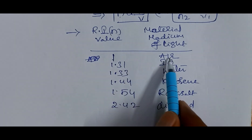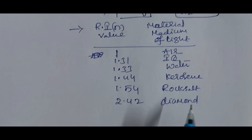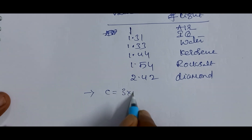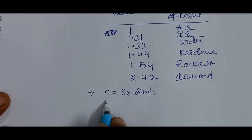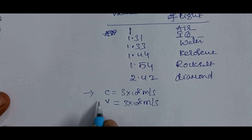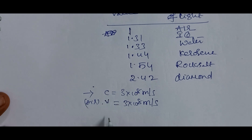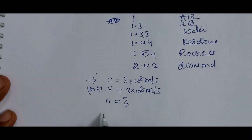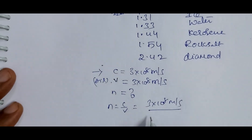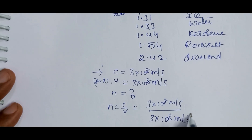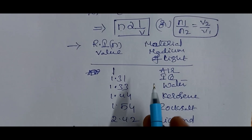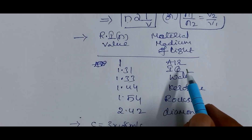We can also calculate the refractive index of air using the formula N = C/V. The speed of light in vacuum C is 3 × 10⁸ m/s, and we also take the speed of light in air as 3 × 10⁸ m/s. So N = (3 × 10⁸) / (3 × 10⁸) = 1. That is why the refractive index of air is taken as 1.